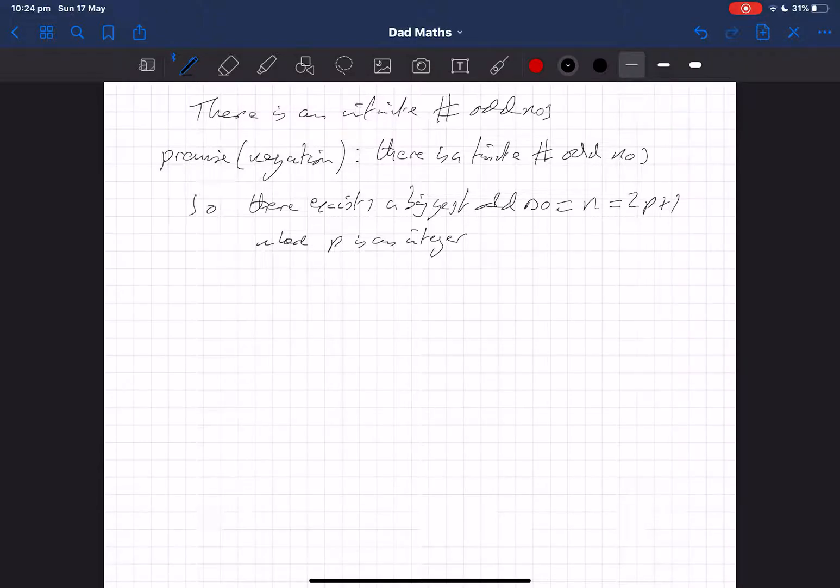So what's the consequence of this? What we want to do with proof by contradiction is obtain a contradiction, something that can't be true. So let's take this biggest odd number and look at another number constructed from it. Because it's still a number, we can add to it.